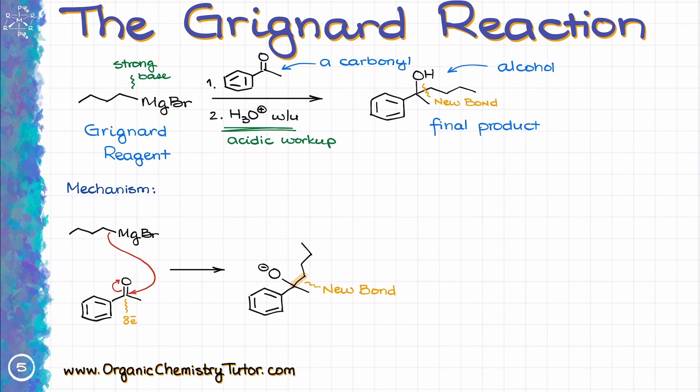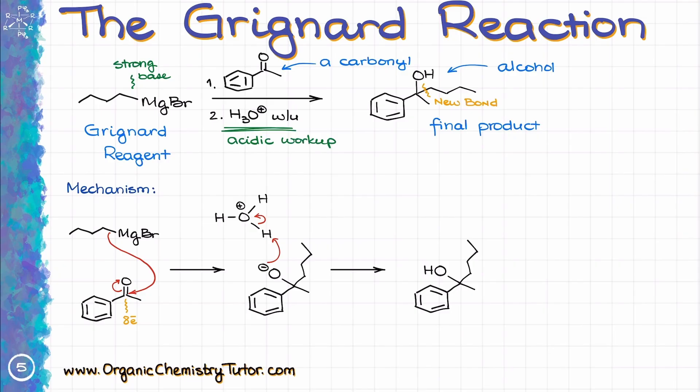After the nucleophilic attack on the carbonyl, you should always have an O⁻. That is something you should always check whenever you're doing this reaction. In the next step, we're going to do the acidic workup, protonating the O⁻. The acidic workup is always going to be the second step in this reaction — some instructors skip it or assume it, but it is always going to be there. Also, in this case, the resulting alcohol is going to be chiral, so your instructor will most likely expect you to indicate the stereochemistry of your products when it is relevant.